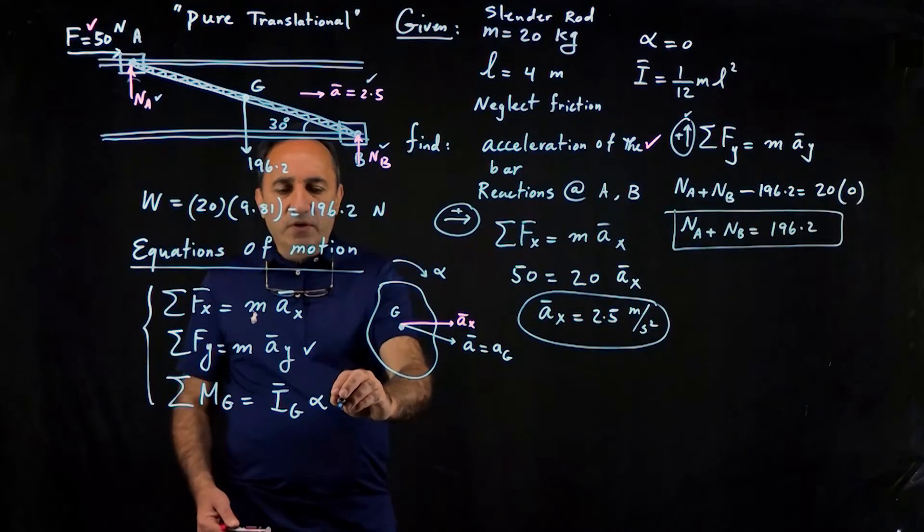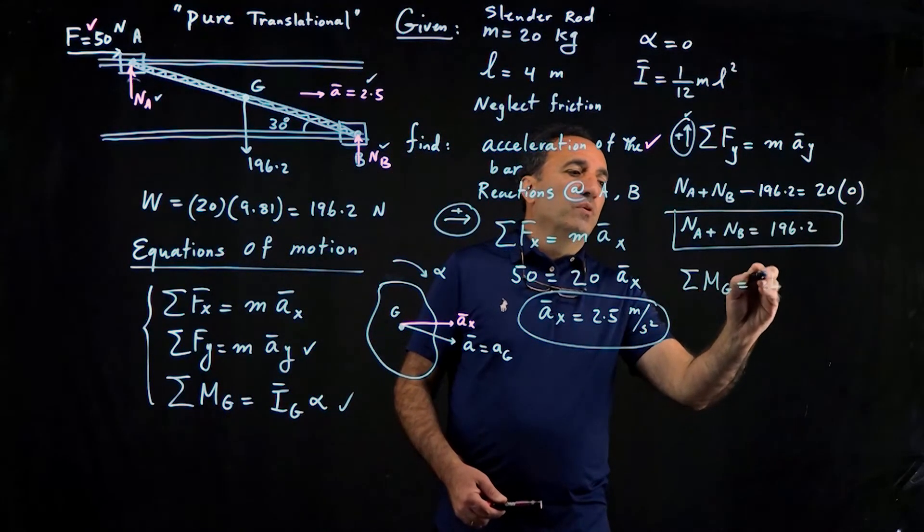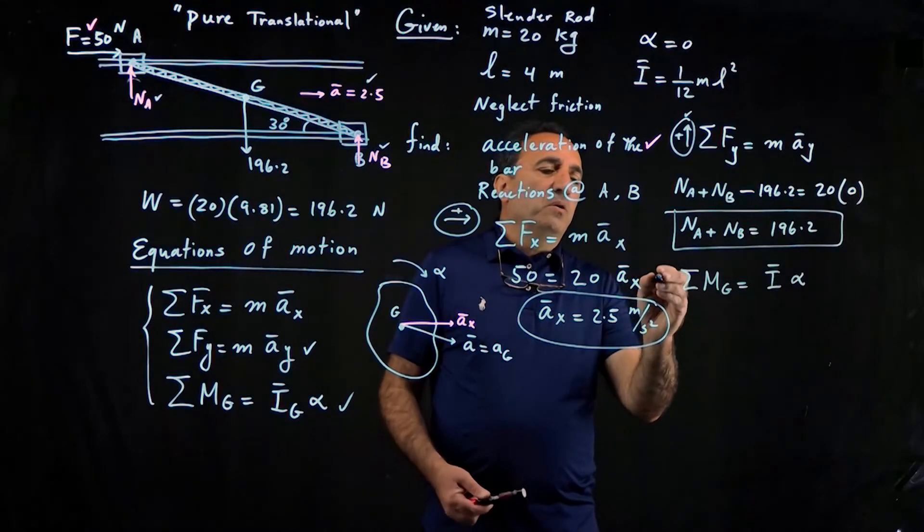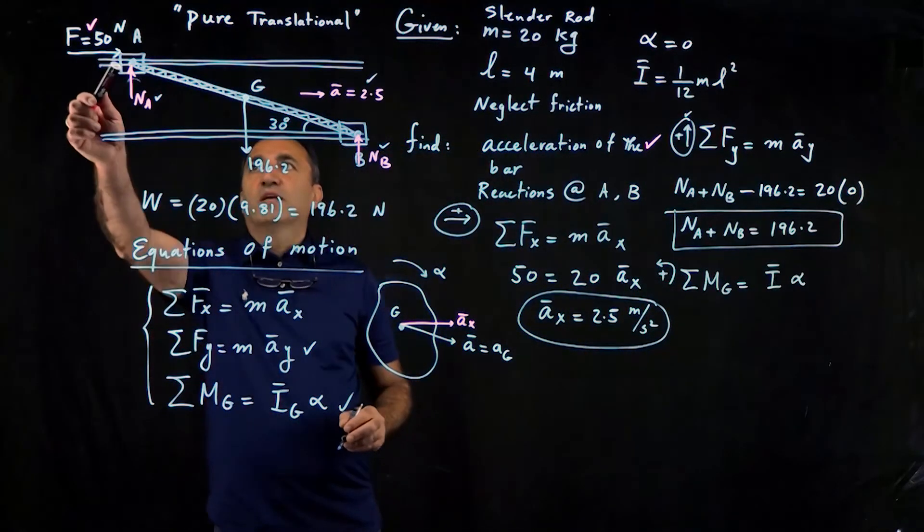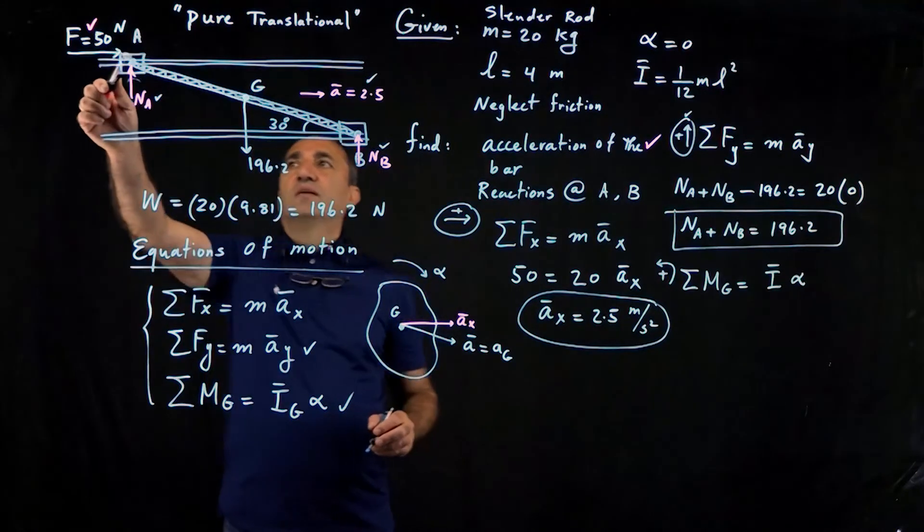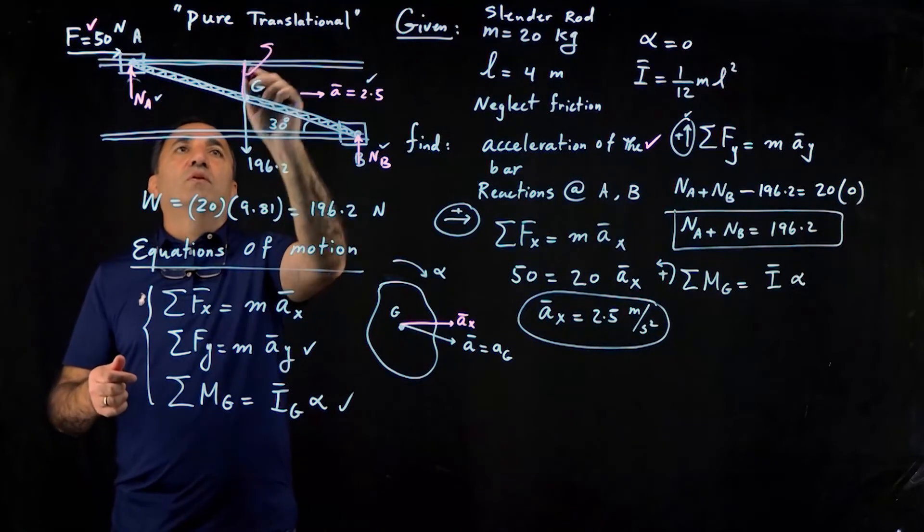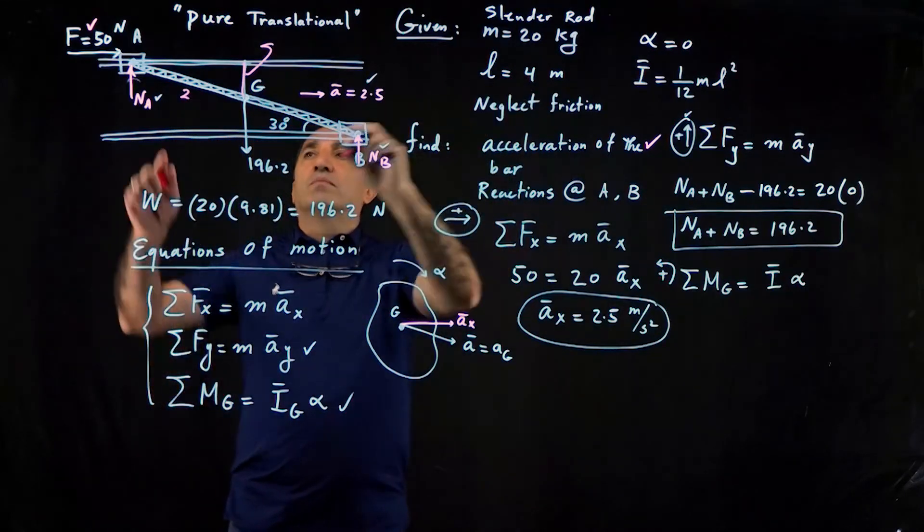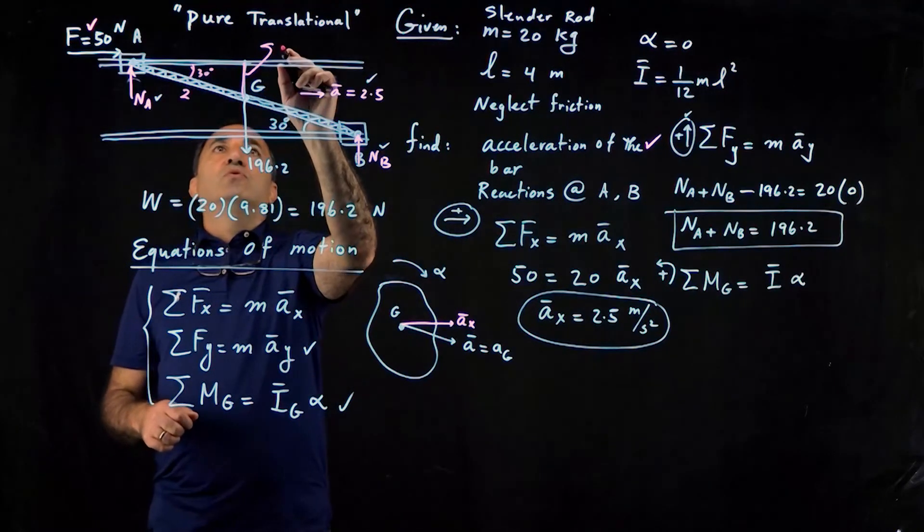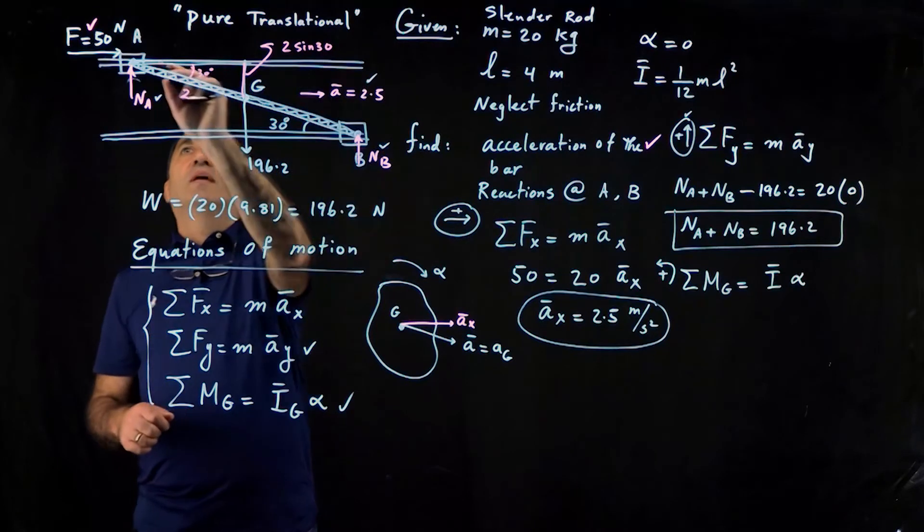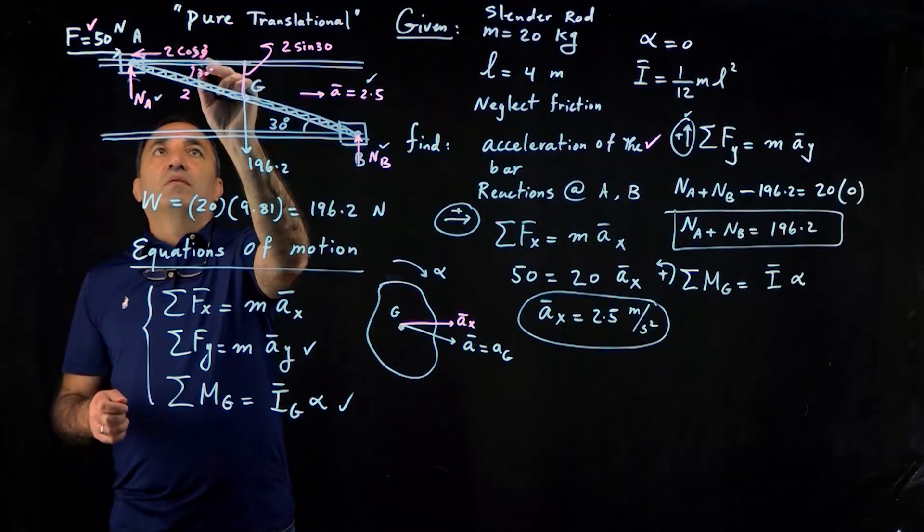So now we finally apply our last equation. Take a moment about g equal to i bar or ig alpha. Pick a direction for yourself. I'll pick counterclockwise to be positive. So according to this free body diagram, I start with the 50. You could see in this picture that this distance is going to be 2 because half of 4, and this angle is also 30 degrees. So this would be 2 sine 30. We need that distance. And this is going to be 2 cosine 30.